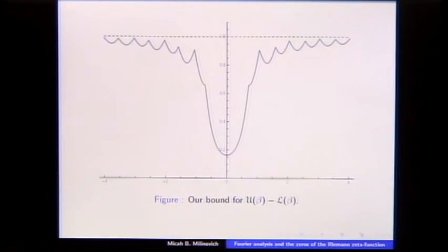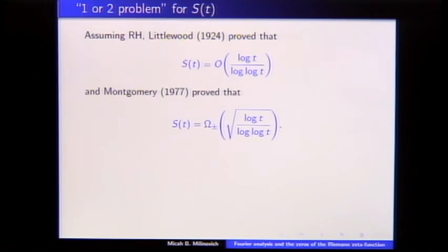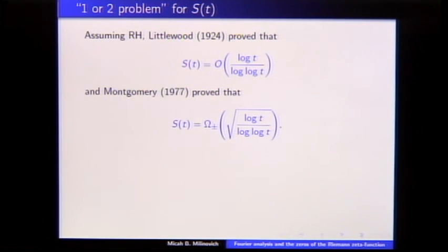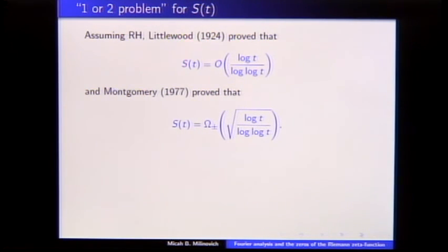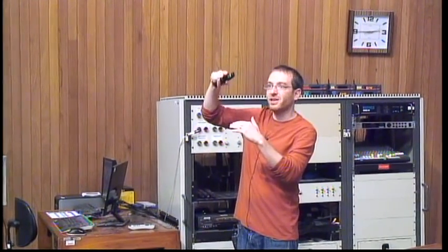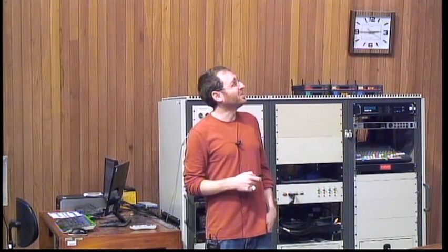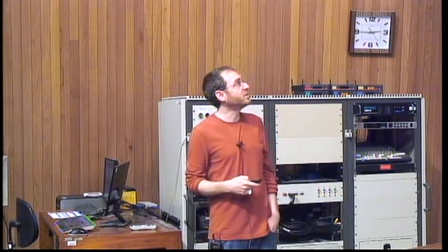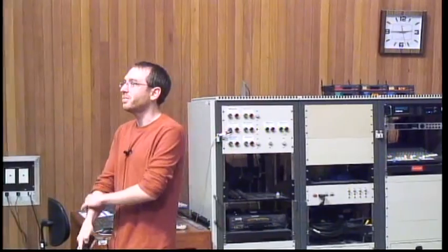Going back to the first part of the talk with S(t): this is the analog of the 'one versus two problem' for S(t). I showed you Littlewood's bound and we got a nice constant. Montgomery proved you can get S(t) as large as root log T over log log T. Conditionally on RH you can show it gets no bigger than twice that. The one versus two is essentially about the constant and involves how many primes you can control in any approximation to the zeta function.